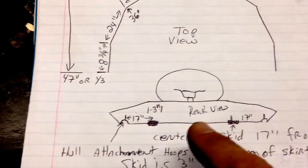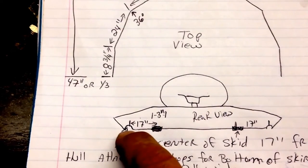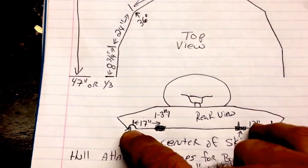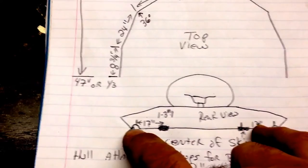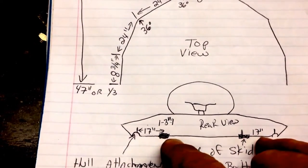Looking from the rear here where the hoops are underneath to attach the lower skirt fingers. Where they're riveted on, it's 17 inches over to the middle of the skid which is three inches wide.